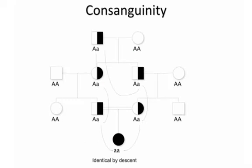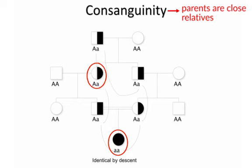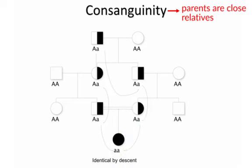For rare autosomal recessive traits, there tends to be an increased frequency of consanguinity — that is, where the parents may be close relatives. In this example, a child is homozygous for little a, and her great-grandfather was heterozygous for an exceedingly rare allele in the population. He transmitted little a to his daughter, who in turn transmitted it to her son, who transmitted it to this child, and simultaneously to his son, then to his daughter, and finally to this child. We say the child is identical by descent, meaning these two alleles are copies of the original allele just a few generations back, expected to be the same down to the nucleotide level in the DNA.